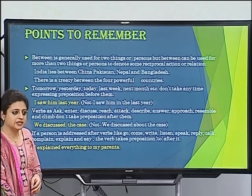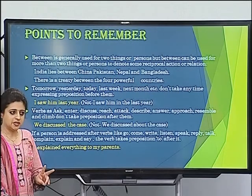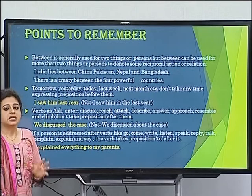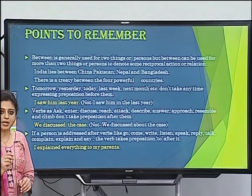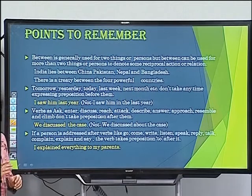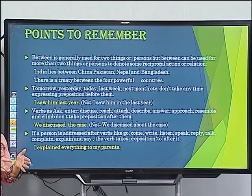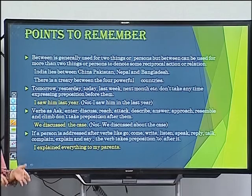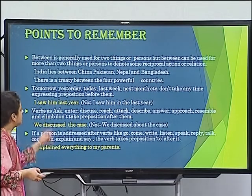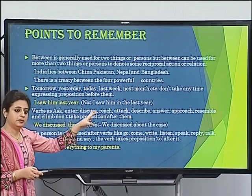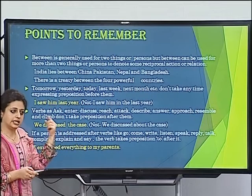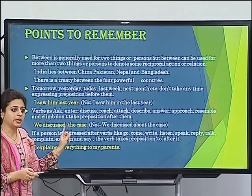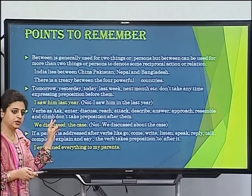'Between' — we have already discussed that 'between' is used for two persons or two things. But exceptions exist. Sometimes, even when more than two things or persons are involved, if there is a common link or connection among them, we use 'between' instead of 'among.' For example, India lies between China, Pakistan, Nepal and Bangladesh — all are neighboring countries with something in common.